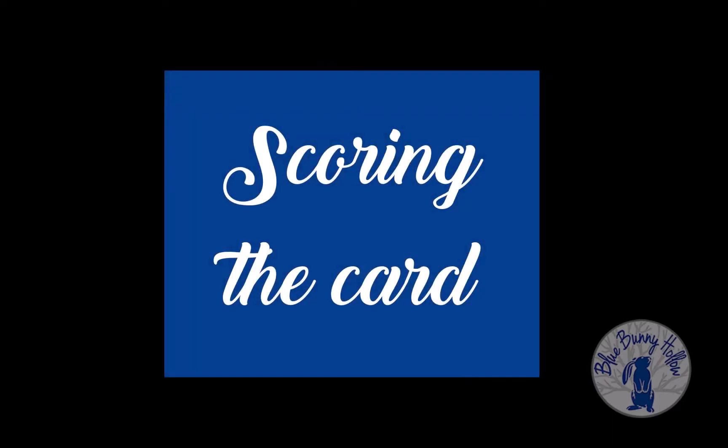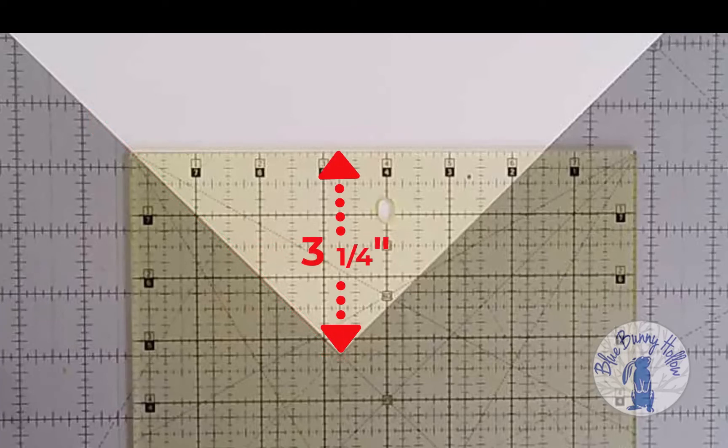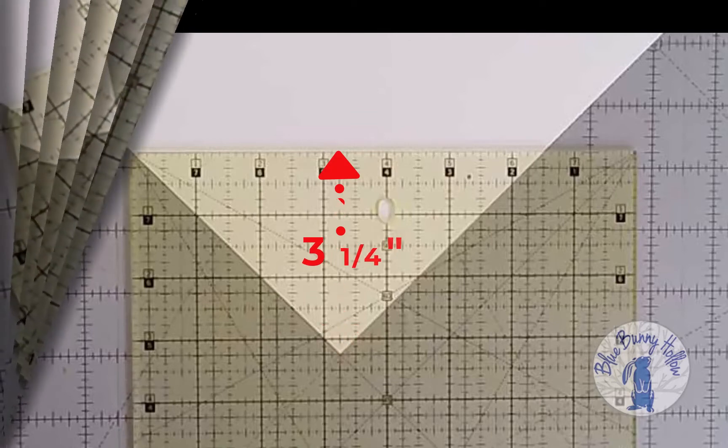The envelope has two small triangles and two large triangles. We will mark the small triangles first. Place the 45 degree marking of the ruler along the left edge of the paper. Measure three and a quarter inches from the corner. Using the burnisher, score along the top edge of the ruler.